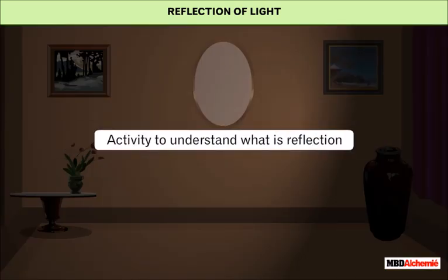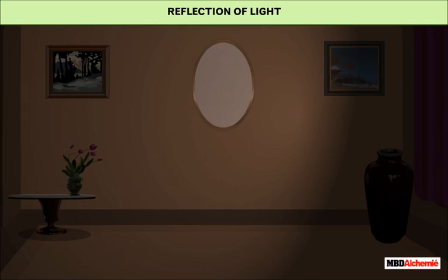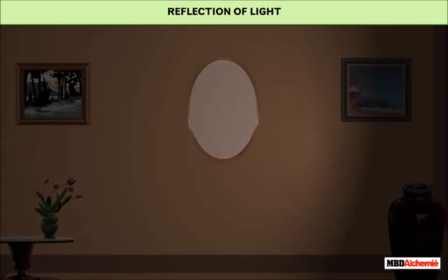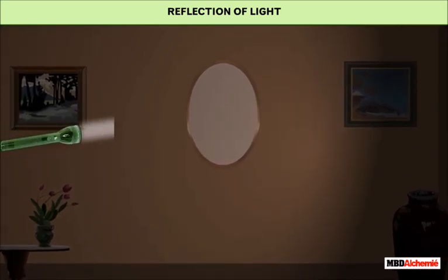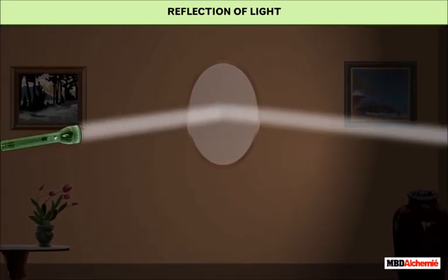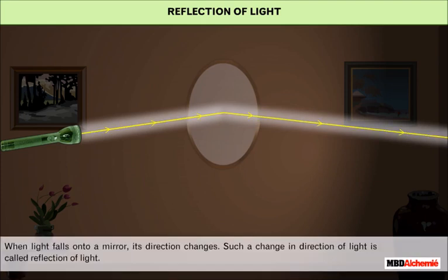Let us do an activity to understand what reflection is. In a dark, empty room, from the left, shine a flashlight on a mirror. You will see a bright patch of light on the wall to your right. This means that when light falls onto a mirror, its direction changes. Such a change in direction of light is called reflection of light.